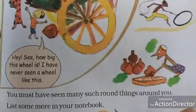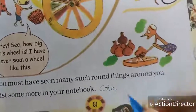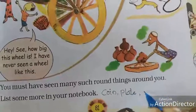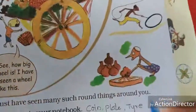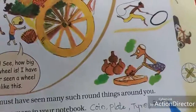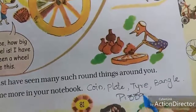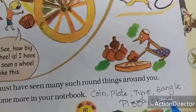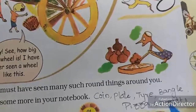What objects look round in shape? Coin and plate. Tire — see this tire. And a bangle. Pizza. Chapati. These are all round shapes around us.